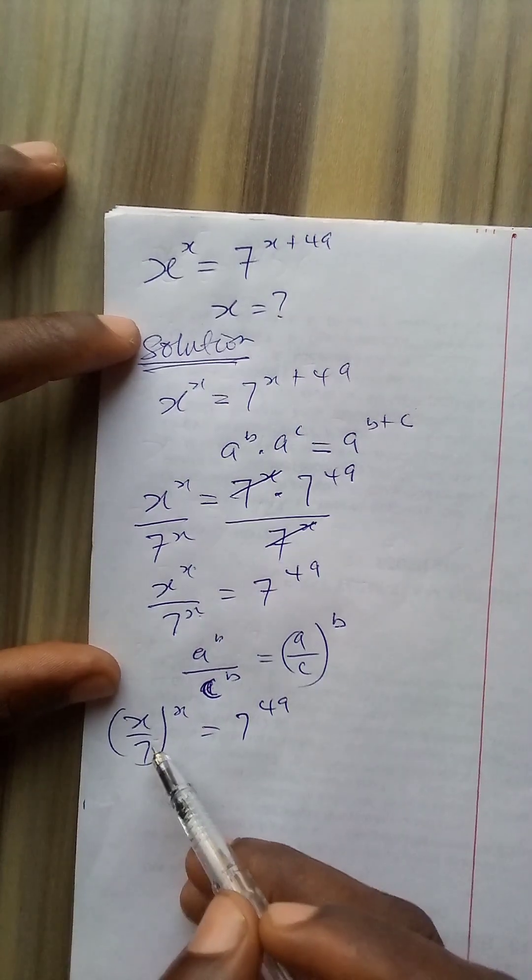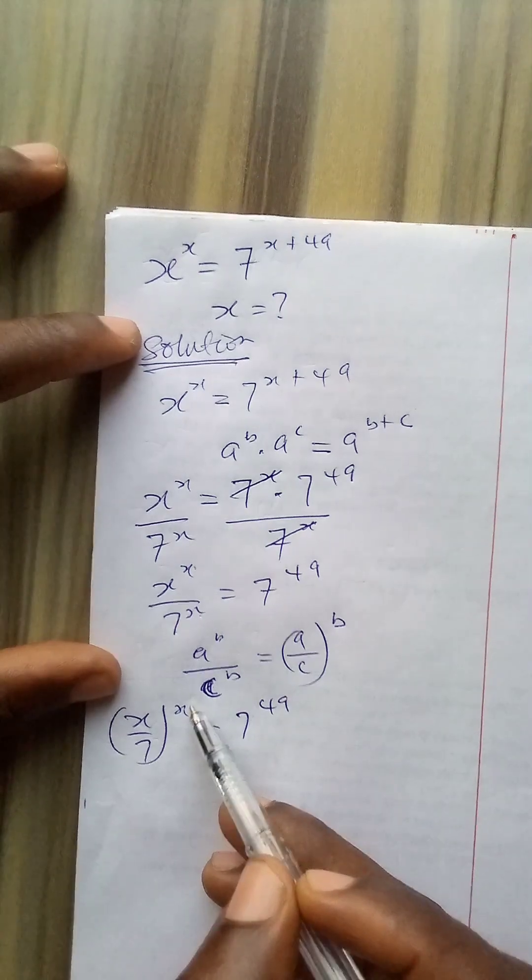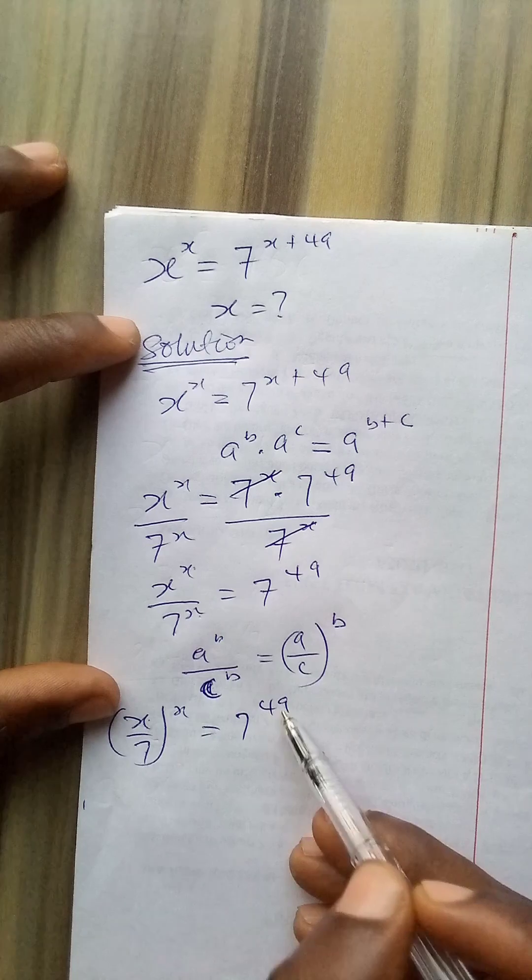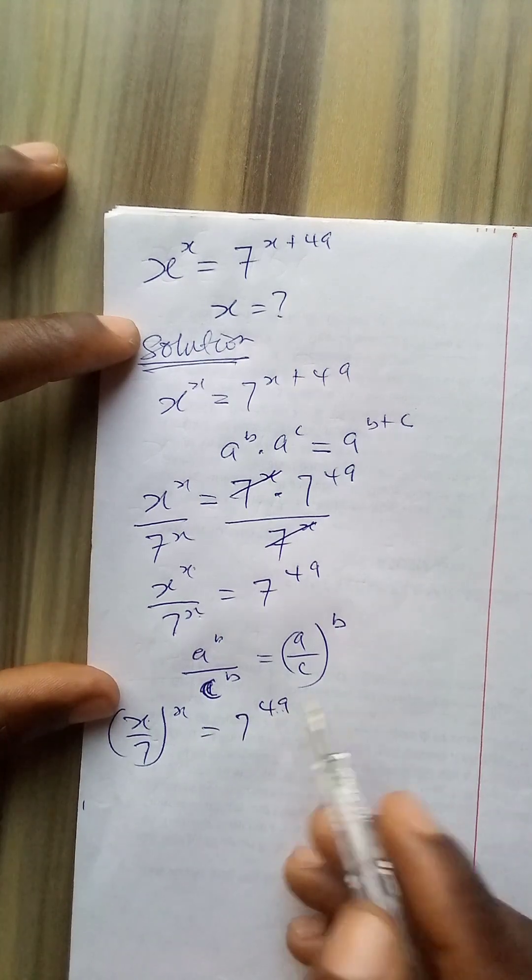My aim is to make the base and the power equal. I have x over 7 here and this is 49. 49 is divisible by 7. So if I divide the power by 7.